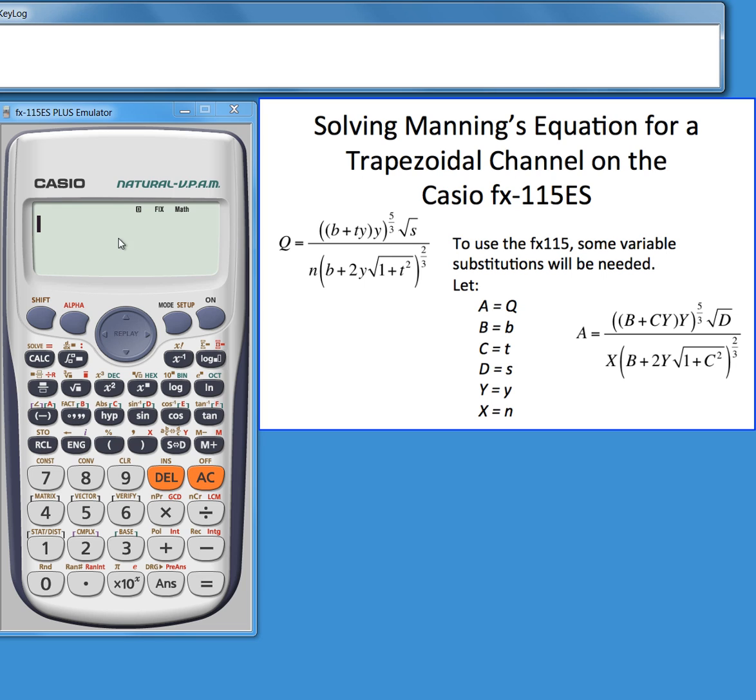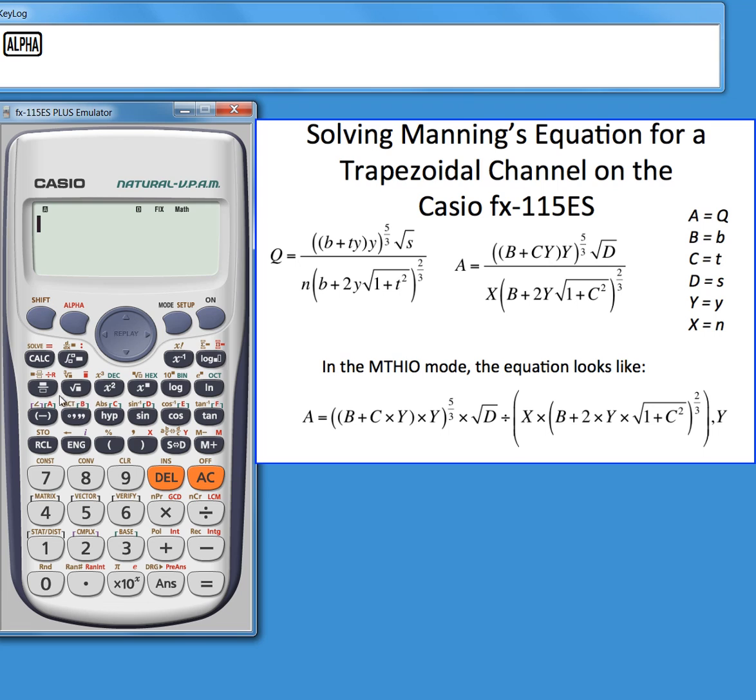The equation will be A equals - notice we've got to use the alpha button and a couple parentheses to make sure operations get done in the correct order. B, which is going to be used to represent b in the original equation.